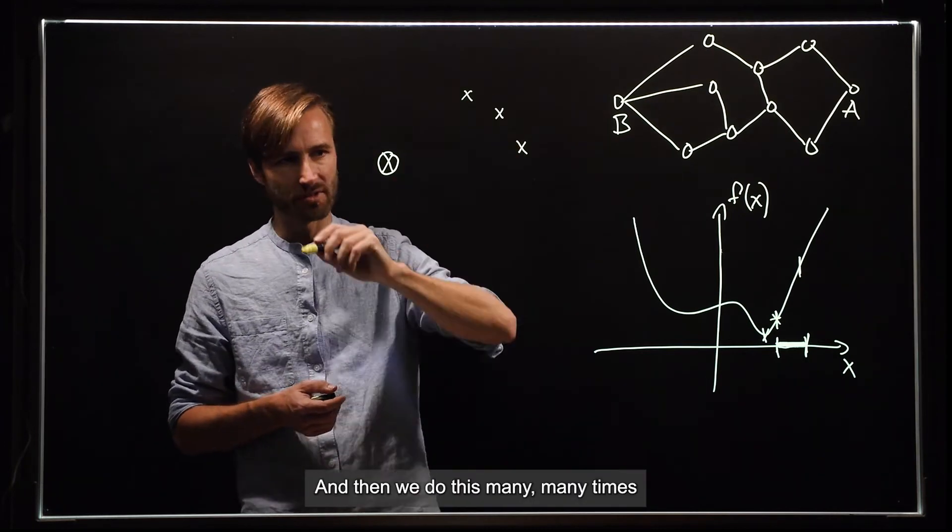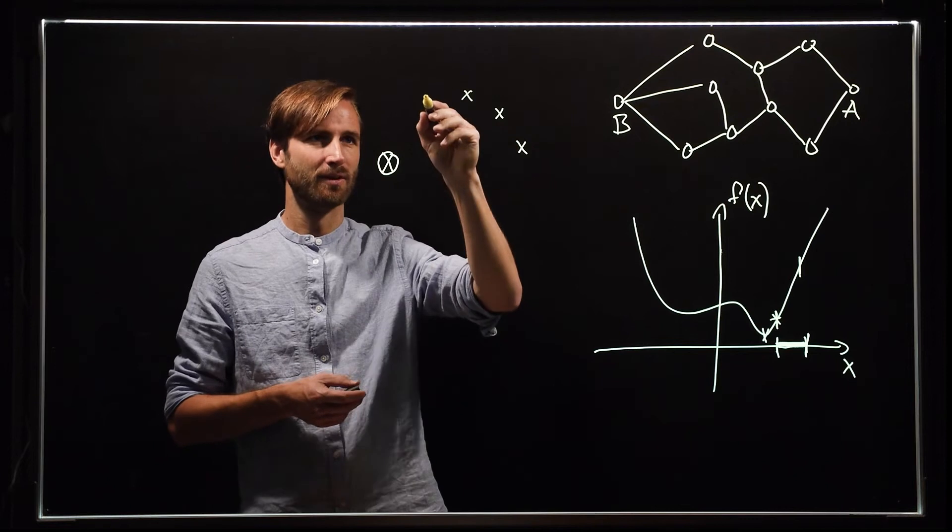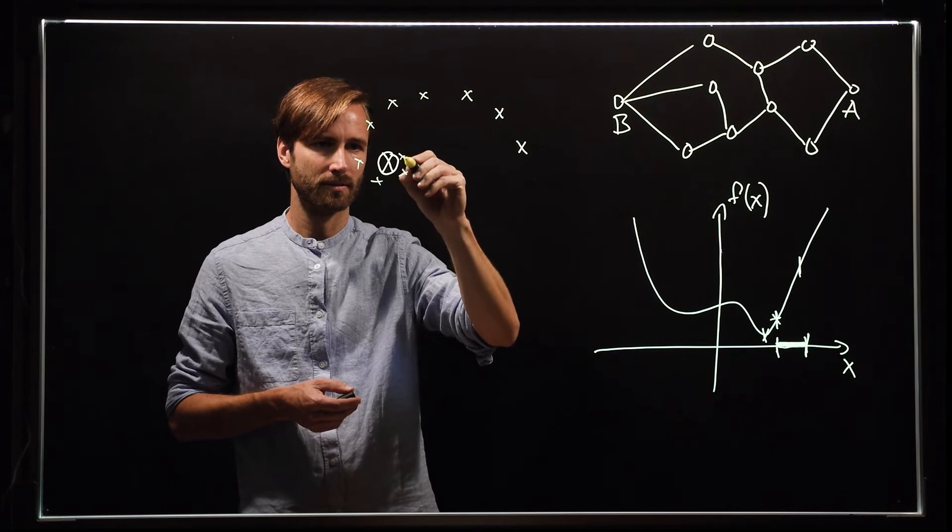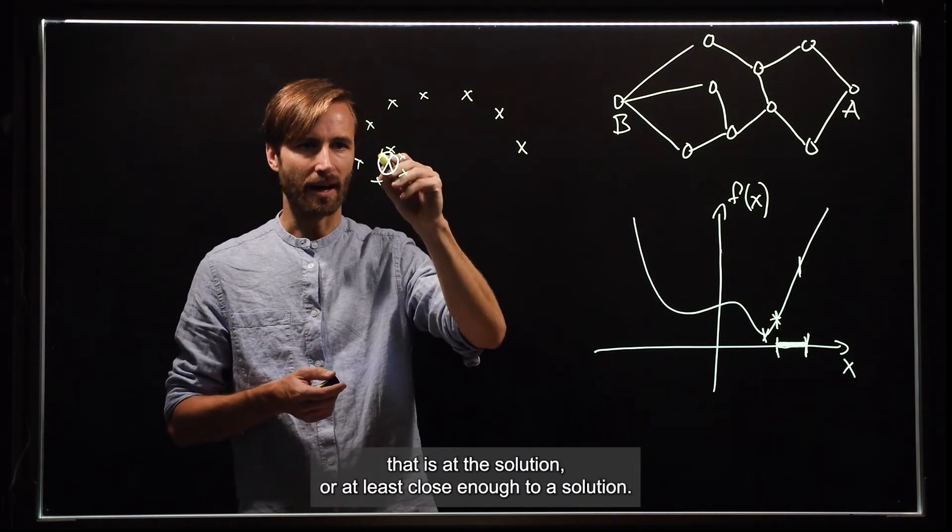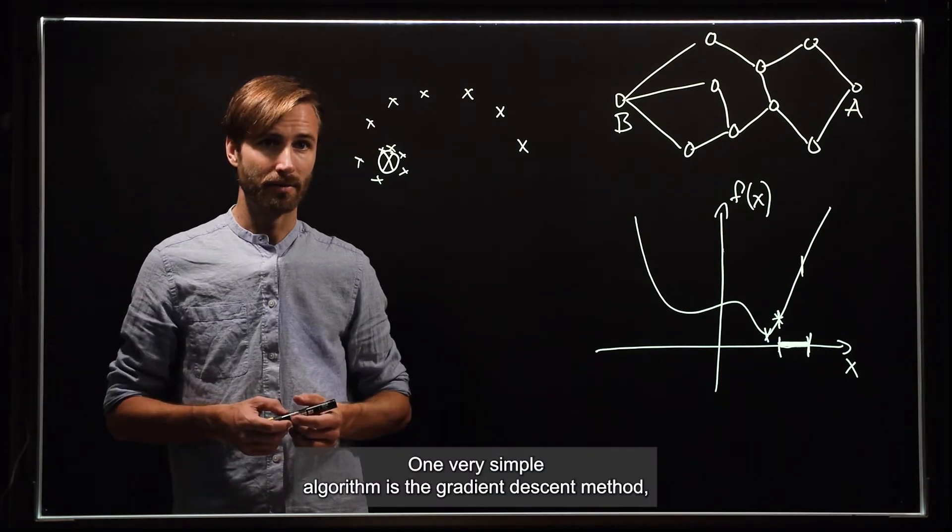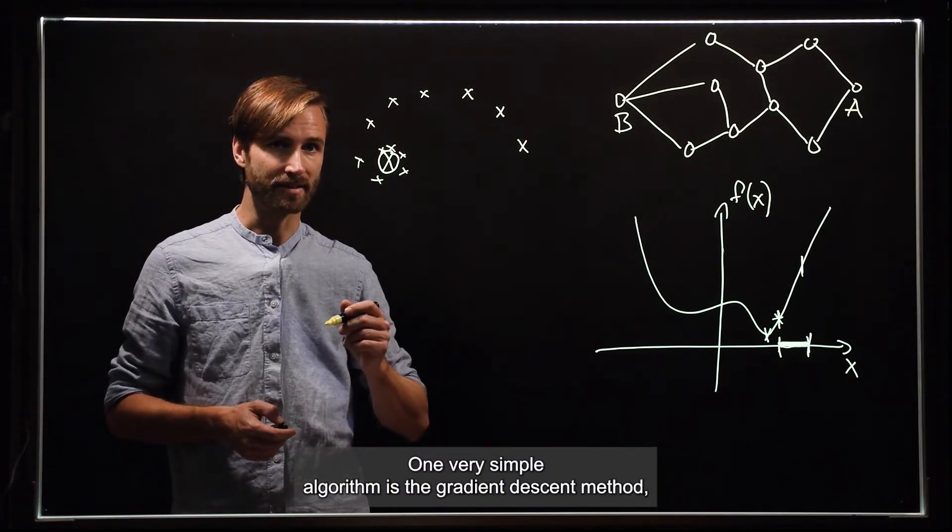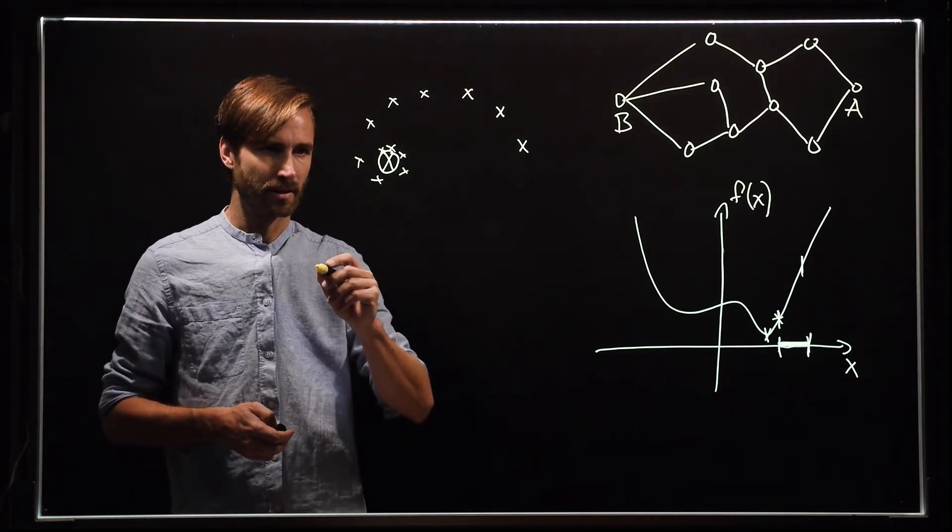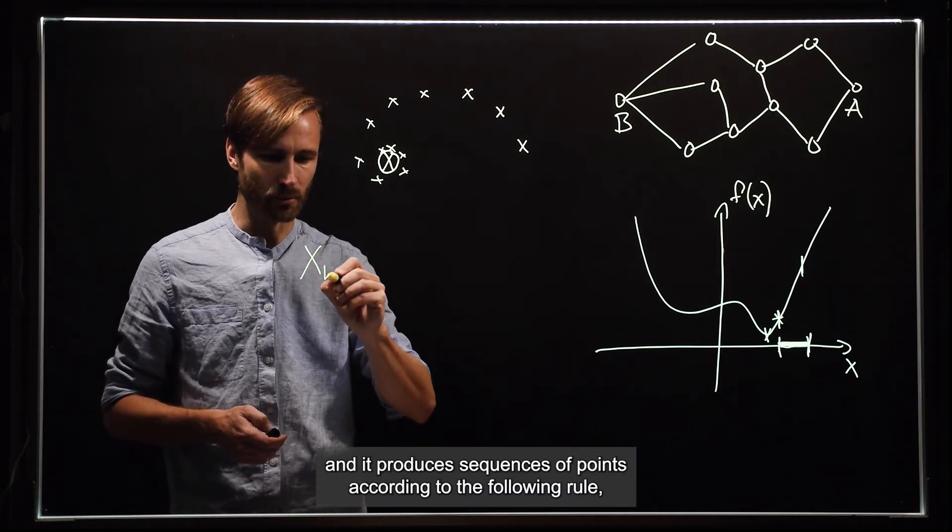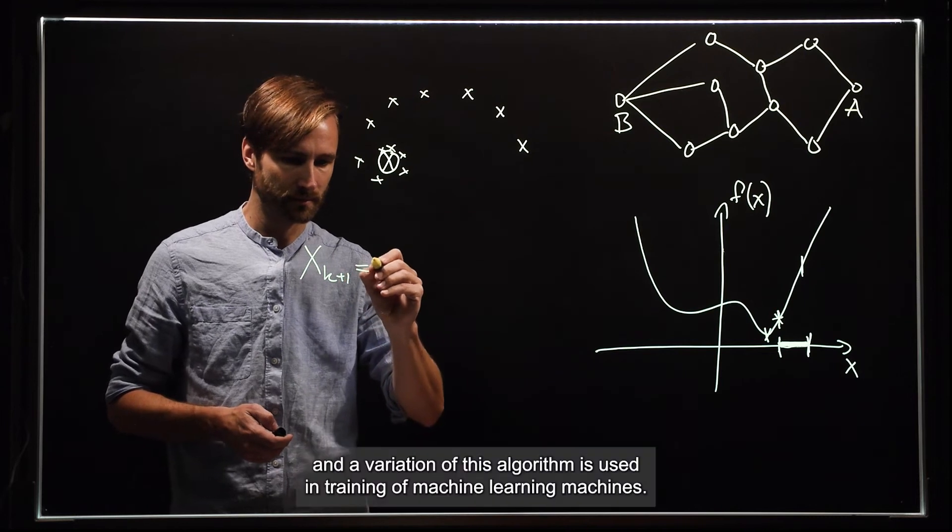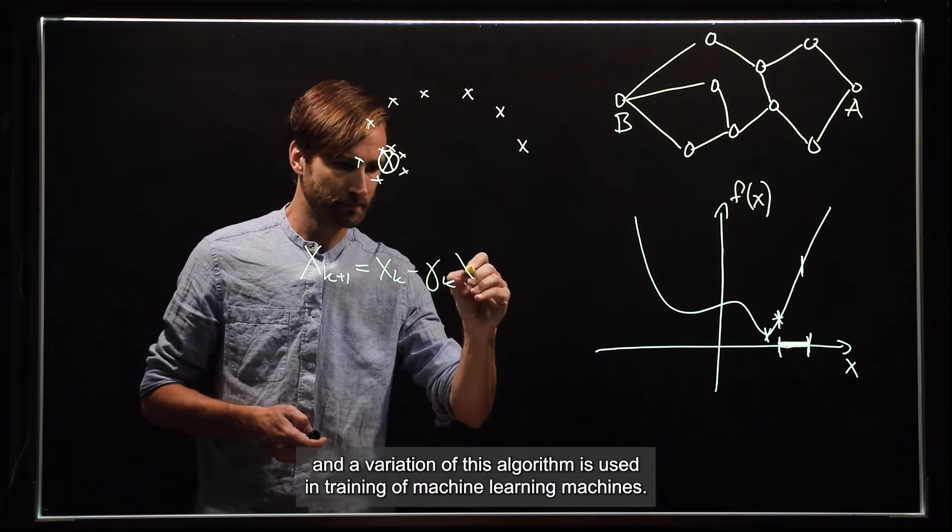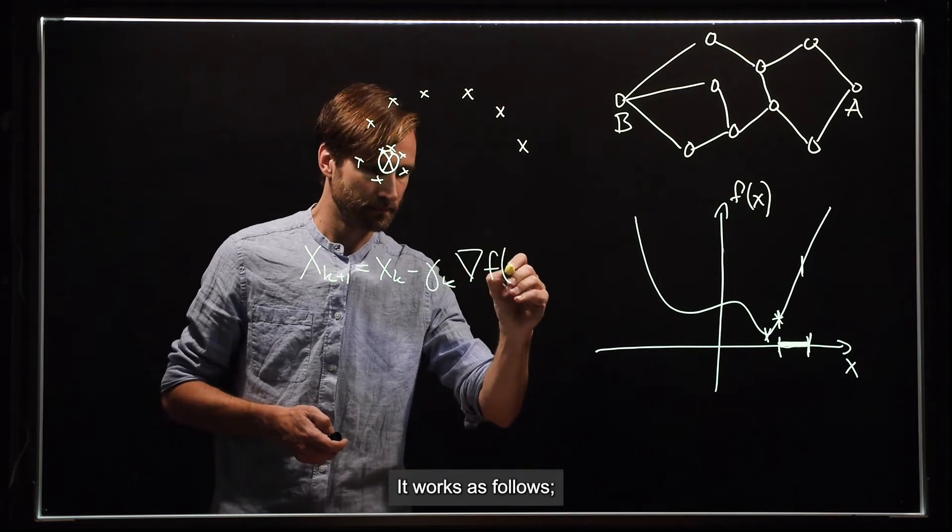And then we do this many, many times until we find a point that is at the solution or at least close enough to a solution. One very simple algorithm is the gradient descent method. And it produces sequences of points according to the following rule. And a variation of this algorithm is used in training of machine learning machines.